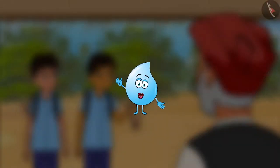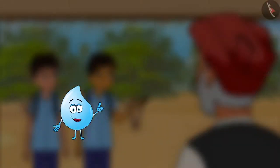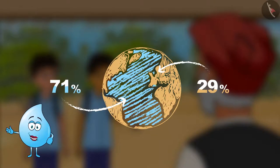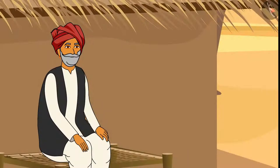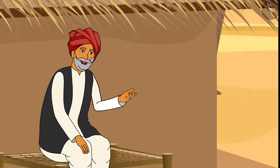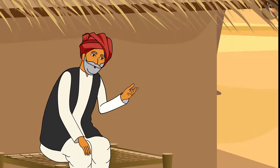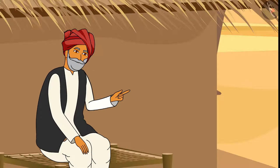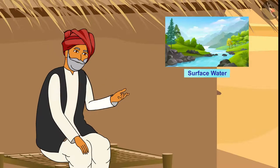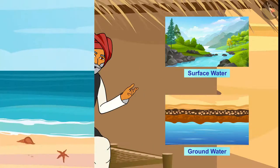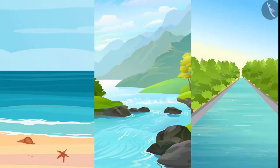Children, do you know the answer to this question? If 71 percent of the earth's surface is covered with water, then why is there scarcity of water? This information is absolutely correct — there is an unequal distribution of water on earth. Water on earth is found as surface water and groundwater. Surface water is found in oceans, rivers, lakes, etc.